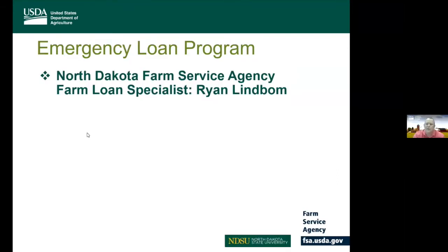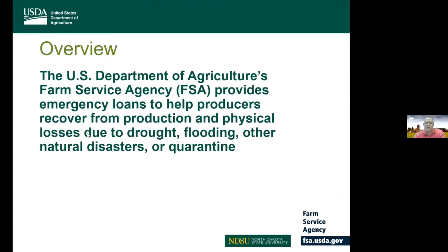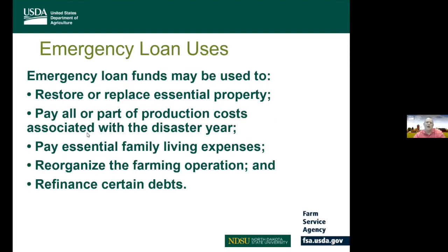Good morning everyone. I'm Ryan Lindbaum, a farm loan specialist here in the North Dakota State FSA office. Once an area is declared a disaster area, producers can qualify for an emergency loan to help recover from production or physical losses due to drought, flooding, or any other natural disasters. Emergency loan funds can be used to restore or replace essential property, pay production costs associated with the disaster year, pay essential family living expenses, reorganize the farming operation, and refinance certain farm-related debts.